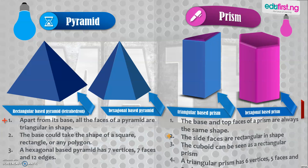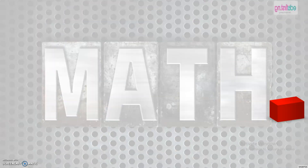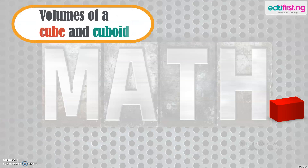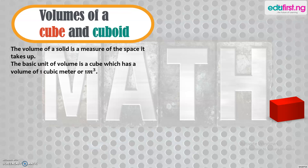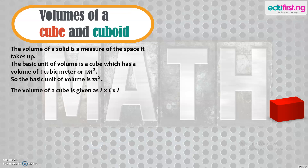Make sure you note the faces, vertices and edges of each shape in your book. Lastly for today, we're looking at the volume of a cube and a cuboid. The volume of a solid is a measure of the space it takes up. The basic unit of volume is one cubic metre. The volume of a cube is given as L × L × L, that is L cubed.